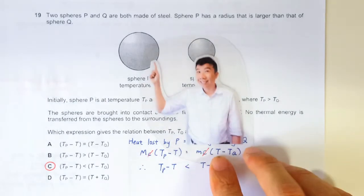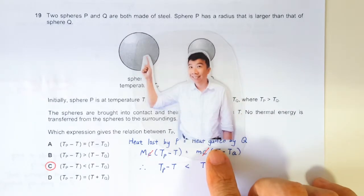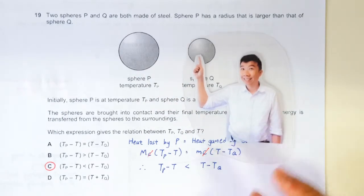So the mathematics will show you that the final temperature will be closer to the initial temperature of this sphere rather than this sphere. Actually, by intuition you have gotten the answer.